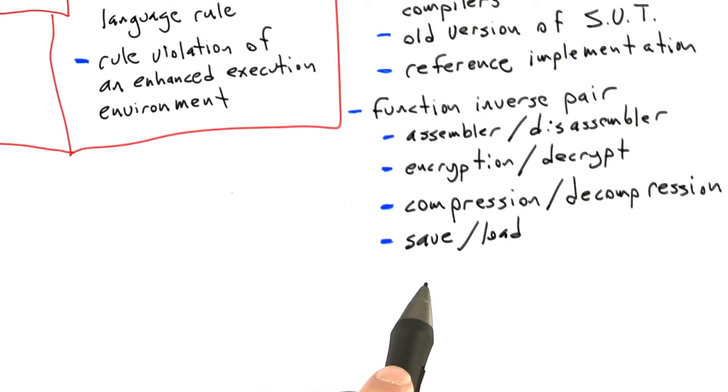If we think about it, we can find these function inverse pairs a lot of places. Another example is encryption and decryption, compression and decompression, saving and loading of files.